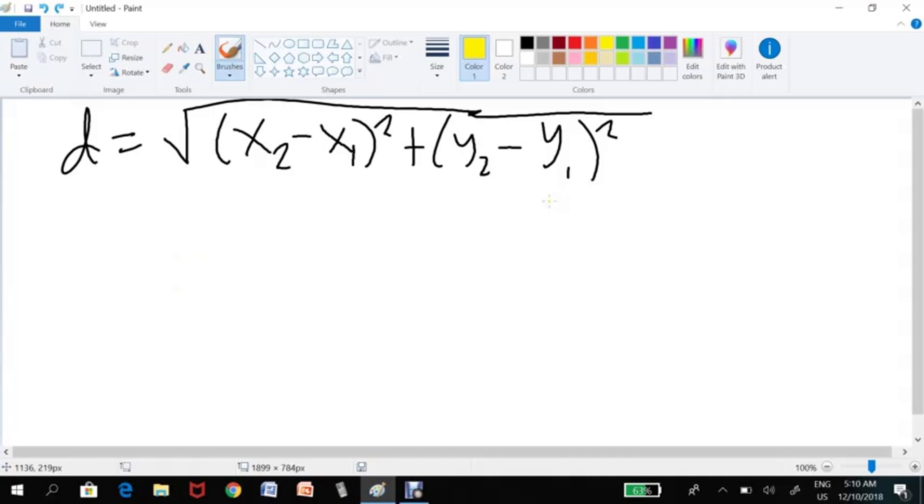Find the distance between two points whose coordinates are (3, -2) and (-2, 10). So, example number 1. We have the points (3, -2) and (-2, 10).